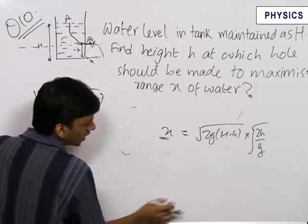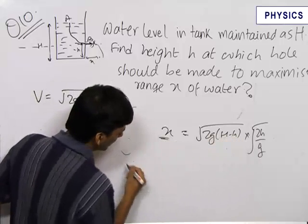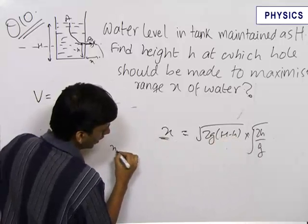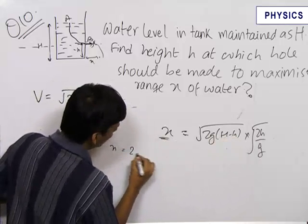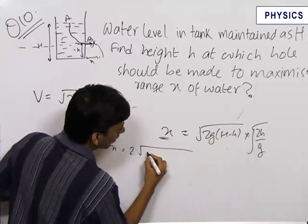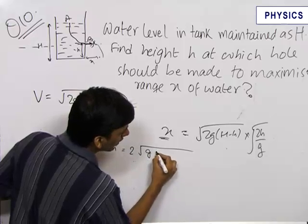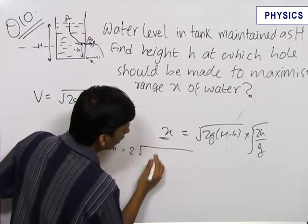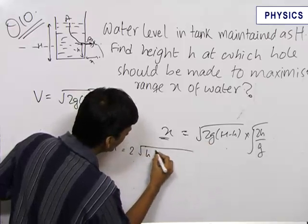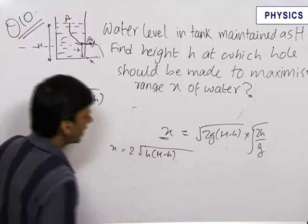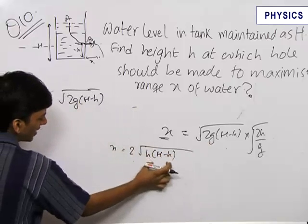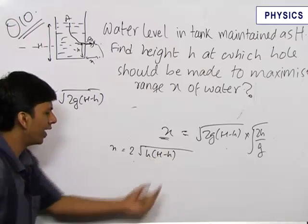This x is a function of h. We need to find the h for which x is maximum. We can write this as 2√[h(H - h)], where g cancels. We need to maximize this function of h.